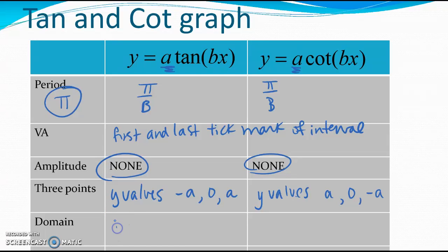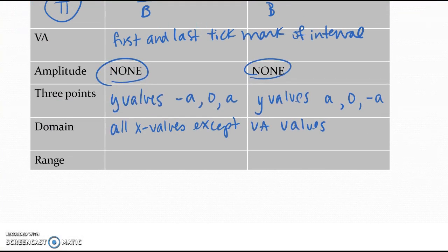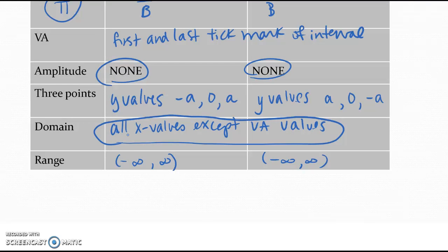The domain is going to be all x values except the vertical asymptote values — true for both tangent and cotangent. The range is going to be all real numbers because these graphs go on to infinity. We will address domain more fully in class.